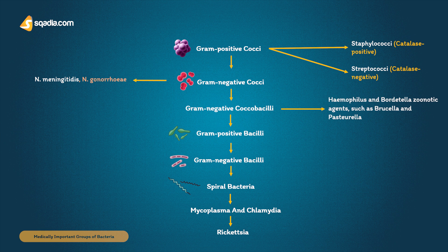Gram negative coccobacilli include the respiratory pathogens Haemophilus and Bordetella, and zoonotic agents such as Brucella and Pasteurella.